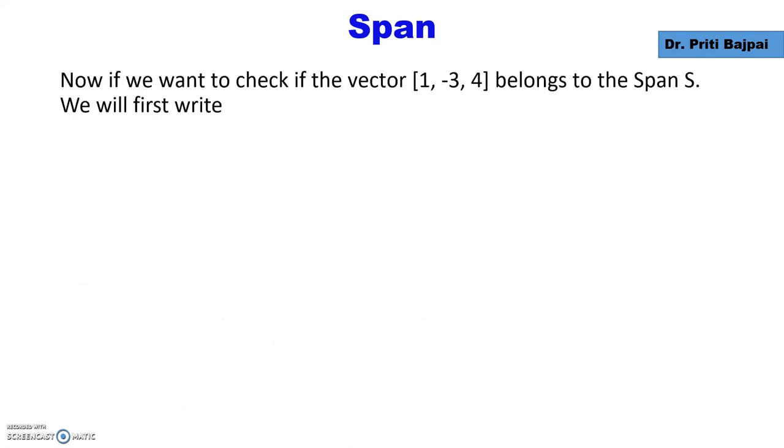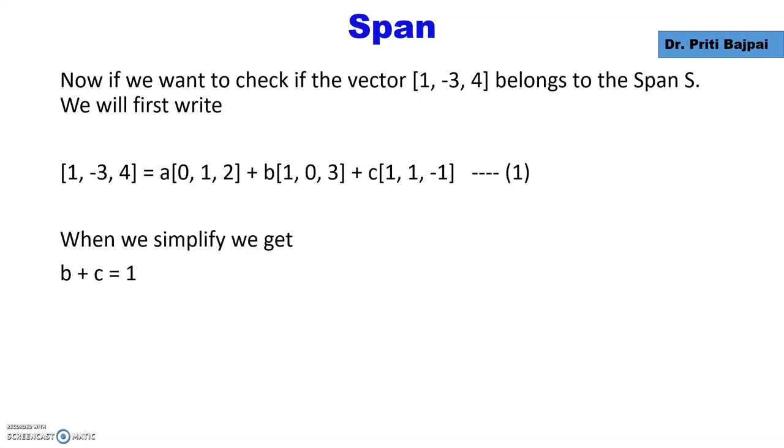Let's add a new dimension to this. What if we want to check whether a particular vector [1,-3,4] belongs to the span S? Then we do the same thing, but instead of X,Y,Z we take the vector [1,-3,4] and do the same routine.